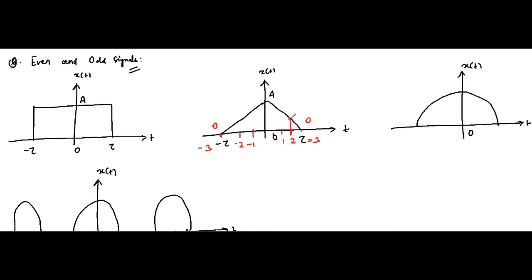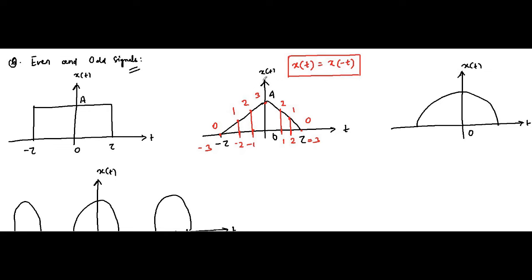Let us pick any value — let's say it is 1. Here also it will be 1. Here it will be 1. Similarly here let's say the value is 2; here at minus 2 the amplitude value will also be 2. Similarly here let's say it is 3. So here the value of the signal in the positive time x(t) is the same as in the negative time x(-t). This is the expression for even signals.